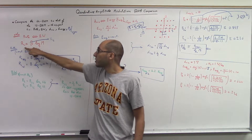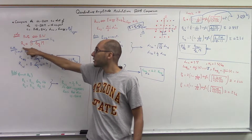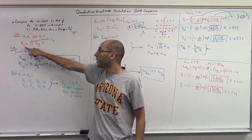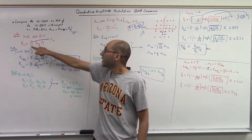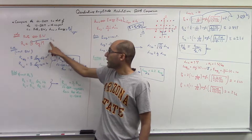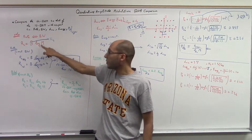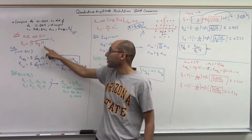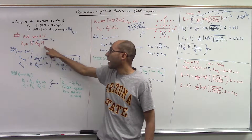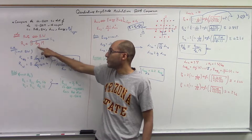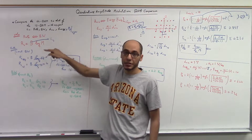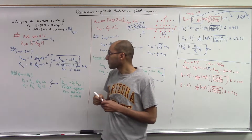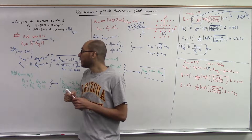Where does this equation come from? It comes from the symbol rate. The bit rate equals the symbol rate multiplied by how many bits per symbol, and here is the constellation size.